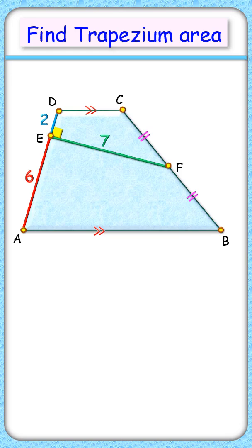This interesting question is a trapezium ABCD where F is the midpoint of side BC. From point F, an altitude is drawn on the opposite side. With these given dimensions, we have to find the area of the trapezium. Let's check the solution.